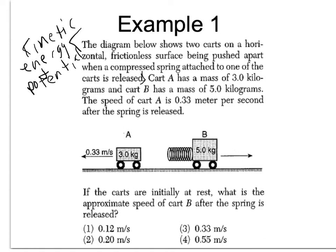Cart A has a mass of 3.0 kilograms and cart B has a mass of 5.0 kilograms. The speed of cart A is 0.33 meters per second after the spring is released. If the carts are initially at rest, what is the approximate speed of cart B after the spring is released?